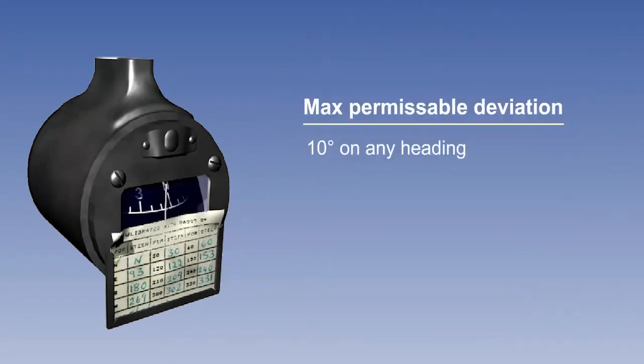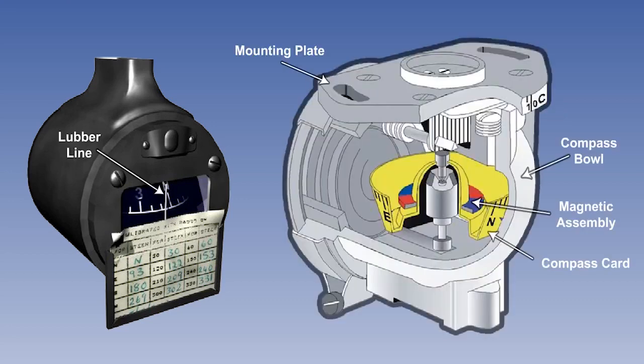The maximum permissible deviation on any heading is 10 degrees. The E-type compass consists of a circular compass card attached directly to the magnet assembly, which is suspended in liquid within a compass bowl. A vertical lubber line on a glass window in the compass casing enables the heading to be read off the compass card.